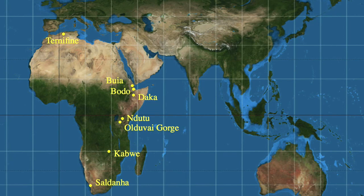Nevertheless, if we look at Africa, we can see a number of important sites, some of them again coming from the East African Rift Valley. From Ethiopia and Eritrea, we have sites like Buia, Bodo, and Dhaka. From Tanzania, we have specimens from Ndutu, also specimens from Olduvai Gorge still, in some of the later beds. We have a specimen from Kabwe in Zambia, and some South African specimens including Saldana. There are also specimens from North Africa, including an important assemblage of mandibles from the site of Ternaphine.